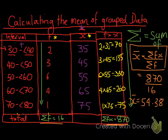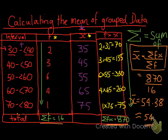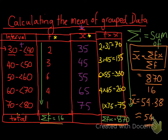So we have 870 divided by 16, which gives us 54.38, and we can round that to 54. Calculating the mean of grouped data is a little more complicated — it can be long and time-consuming because you have to work out what the values may be — but it's not too hard, and I hope this video clarified things for you.